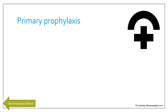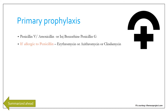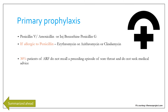For primary prophylaxis, when the patient has pharyngitis and you want to eradicate streptococcal infection to prevent cross-reactivity between streptococcal antigens and organ antigens, give oral penicillin V or amoxicillin, or IM benzathine penicillin G or crystalline penicillin. In penicillin allergy, use erythromycin, azithromycin, or clindamycin. Importantly, 30% of acute rheumatic fever patients do not recall a preceding sore throat episode.